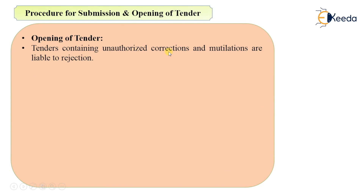Tenders containing unauthorized corrections or mutilations are liable for rejection. If the officer finds that there are unauthorized corrections — corrections which were not attested — or if there are mutilations of the particular pages, values, or rates, then he will reject that tender.